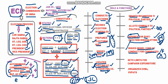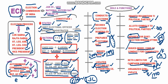ECI also sets limits for campaign expenditure, ensuring political parties do not exceed a specified spending cap during their campaigning. Additionally, ECI organizes EVMs — Electronic Voting Machines — which were introduced in India in the 1990s and deployed in a phased manner across India between 1998 and 2001.